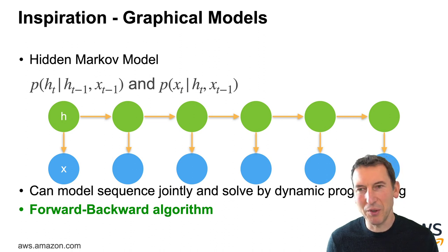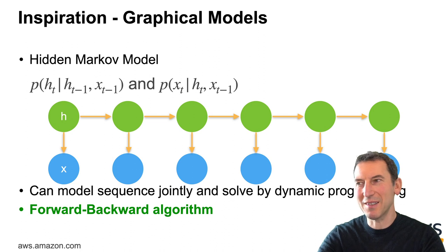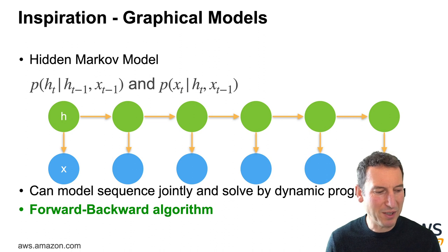So this gives me what's called the forward backward algorithm, where I perform a forward pass and then a backwards pass. And then this allows me to infer much more accurately what the corresponding hidden state would be.